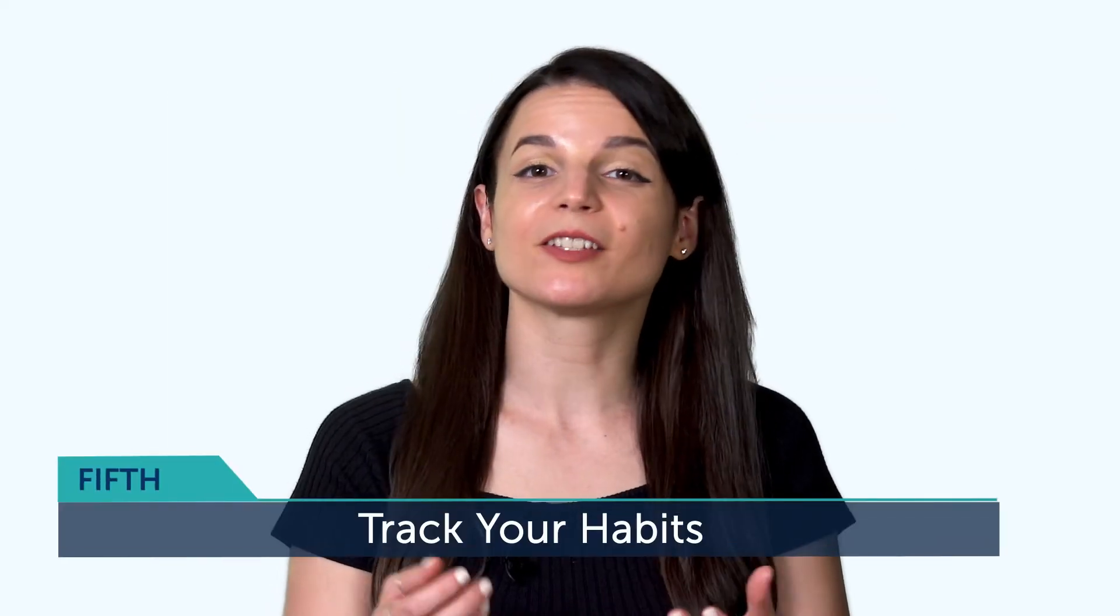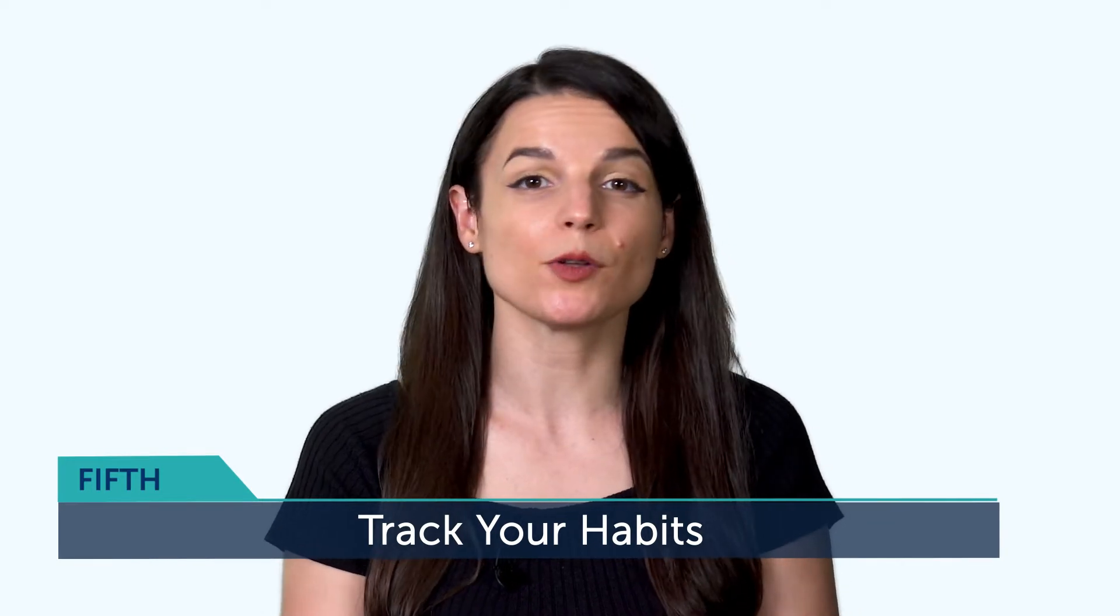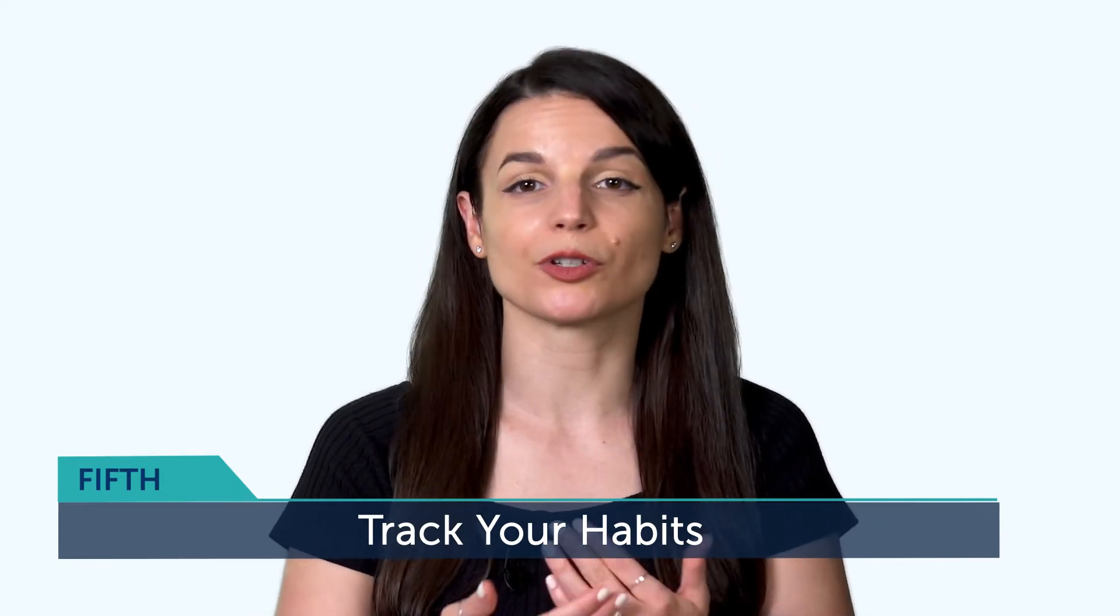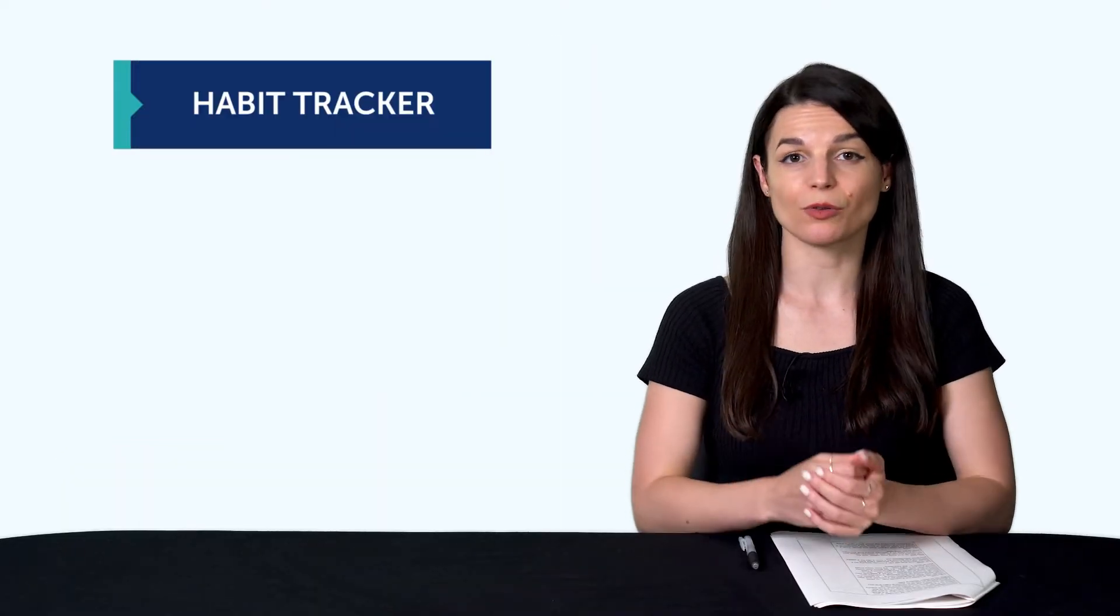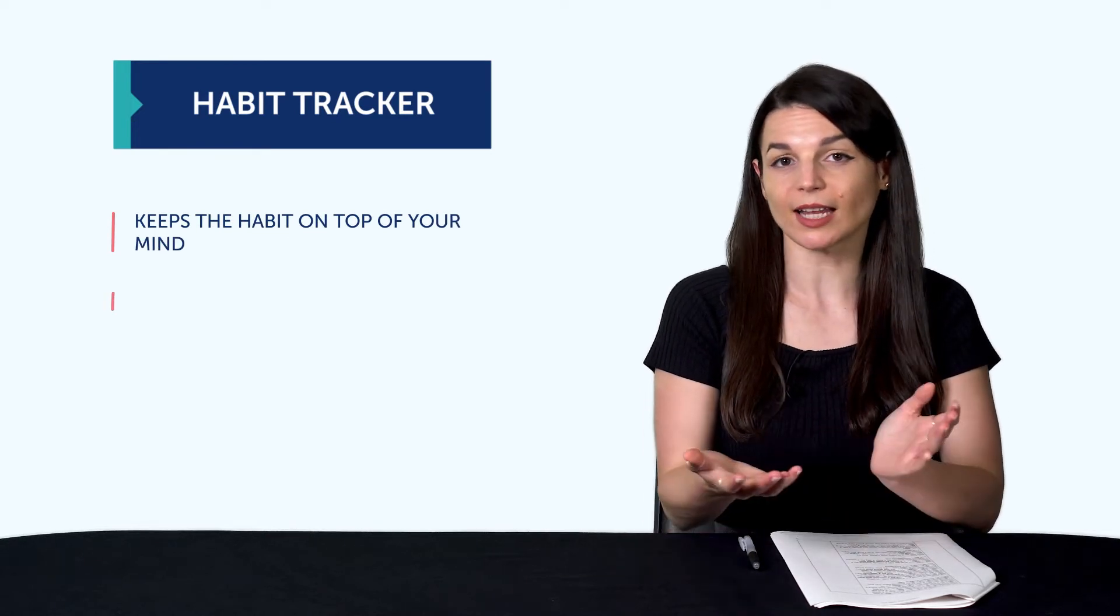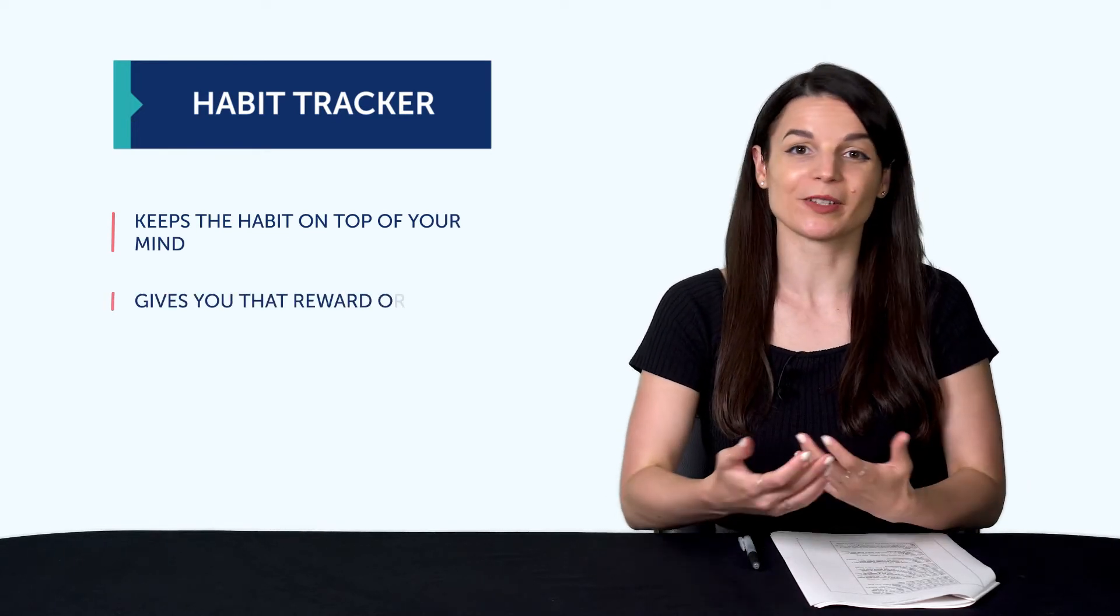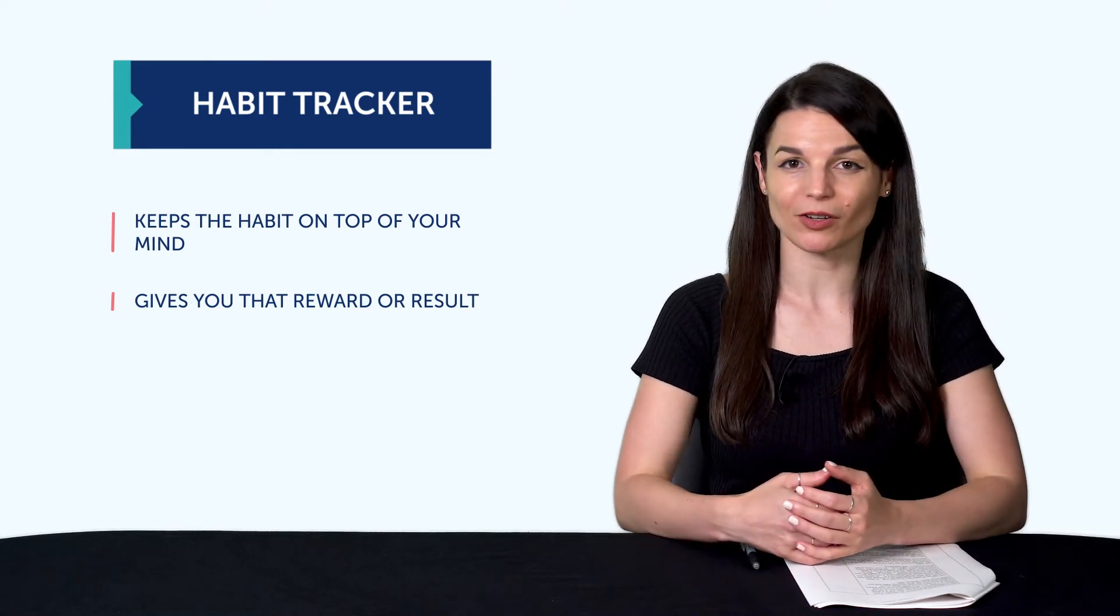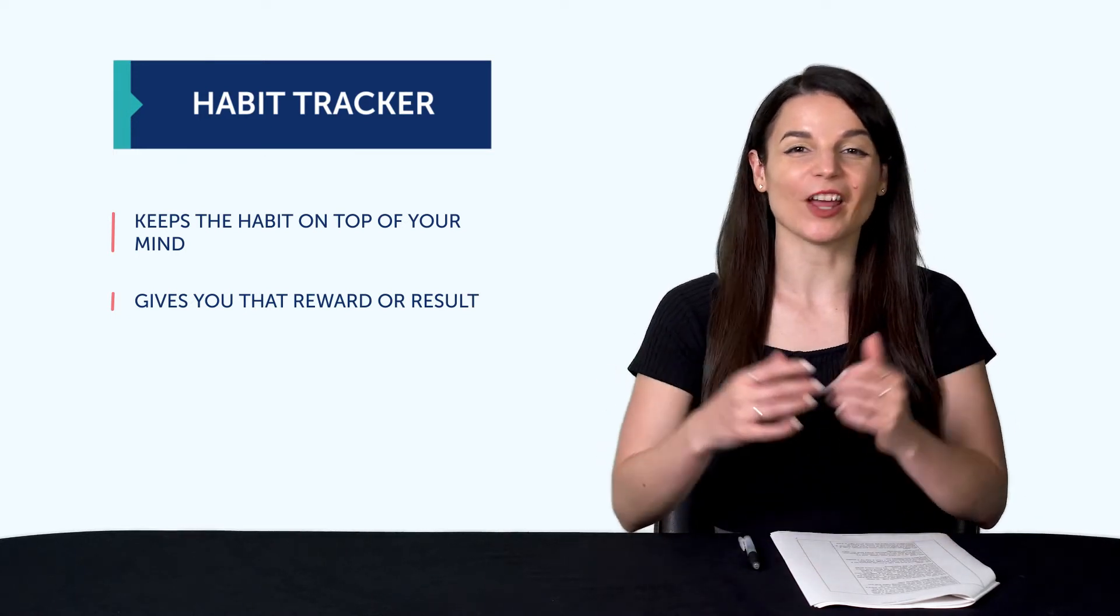The fifth tip is to track your habits. And it's something you can do with a calendar, where you cross the days on a calendar every time you learn your target language. Having that habit tracker does two things. First, it keeps the habit on top of your mind. And second, it gives you that reward or result. So, if you're consistent, you have the visual proof right in front of you. If you're not, well, at least now you know your progress.